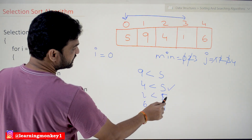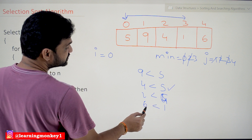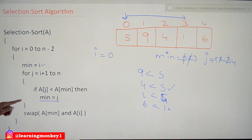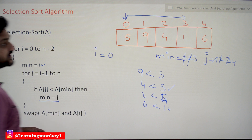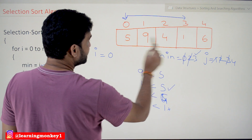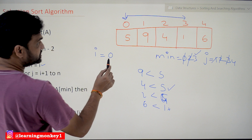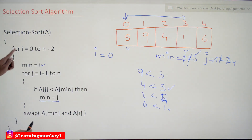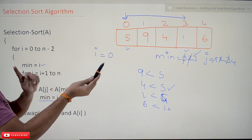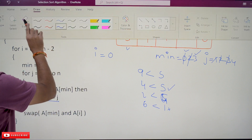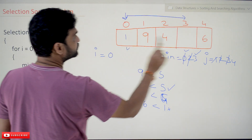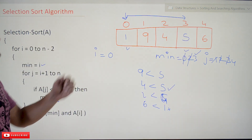Note: the value at index 3 is 1, not 5 — that was a mistake earlier. So 6 less than 1 is not true. The min index remains 3. We exit the inner for loop and swap a[min] with a[i]: a[3] and a[0], which means 5 and 1 get swapped. After the first iteration of the outer for loop, 5 and 1 are swapped.